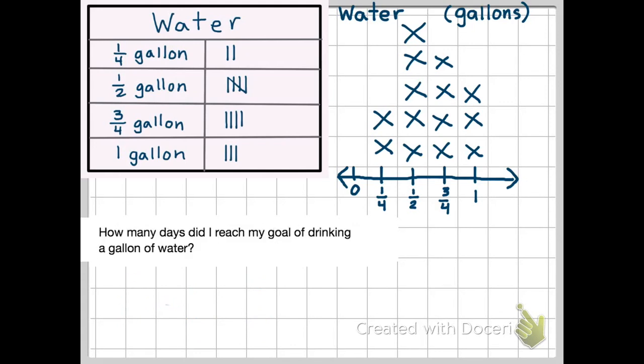Our second question, using the same measurement data, is how many days did I reach my goal of drinking a gallon of water? So we look at the one for the one gallon, and we can count how many tally marks or how many x's we have. So we have one, two, three x's above one gallon. So there were three days that I reached my goal.